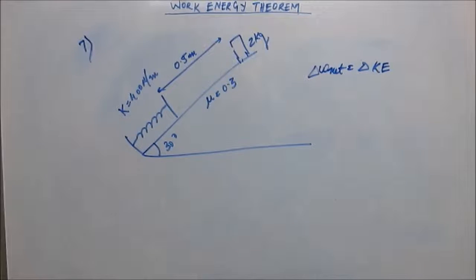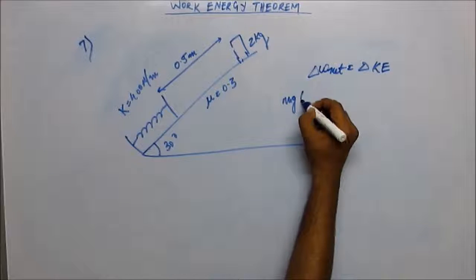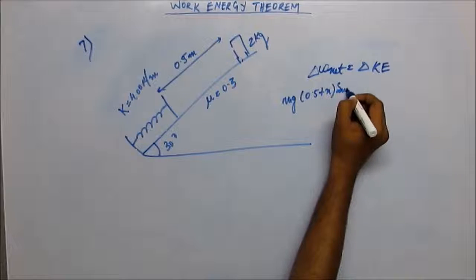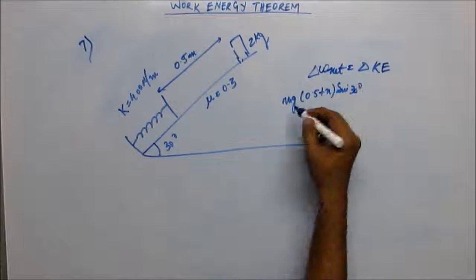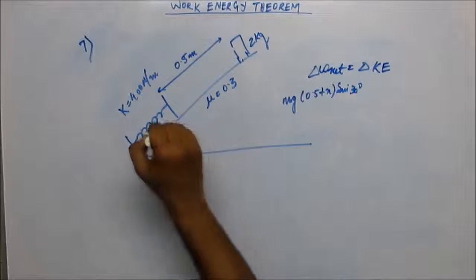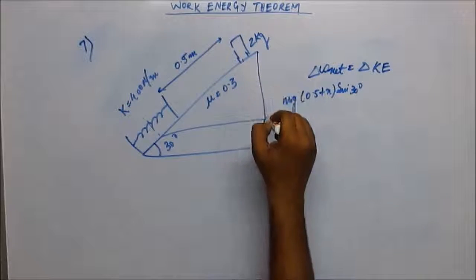So work done by gravity will be equal to mg (0.5 + x) sin 30 degrees. This is the vertical component.